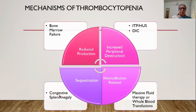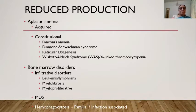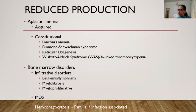Sequestration of platelets by congestive splenomegaly is an uncommon but known cause. The rarest cause, more common in trauma ICUs, is dilutional thrombocytopenia from massive fluid therapy or whole blood transfusions. Regarding reduced production, aplastic anemia — commonly acquired — is an important cause.